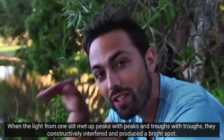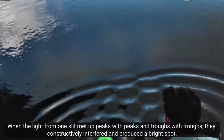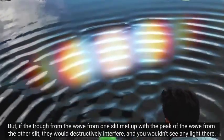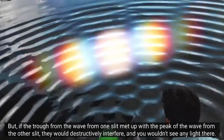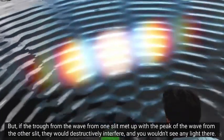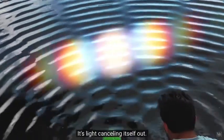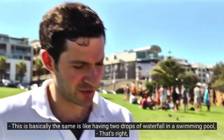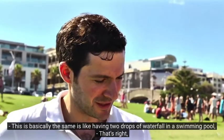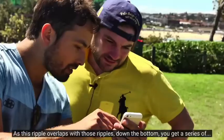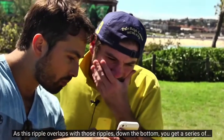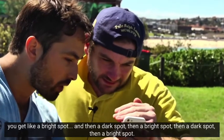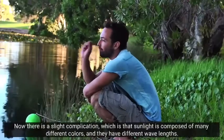Where they meet up peaks with peaks and troughs with troughs, the amplitude of the wave is increased. That's what we call constructive interference. But if the peak from one wave meets up with the trough from the other, then we get destructive interference and there's basically no wave there. This is exactly what was happening with the light. When the light from one slit met up peaks with peaks and troughs with troughs, they constructively interfered and produced a bright spot. But if the trough from the wave from one slit met up with the peak of the wave from the other slit, they would destructively interfere and you wouldn't see any light there.